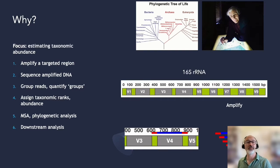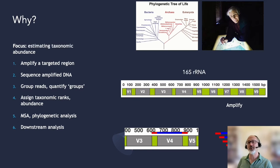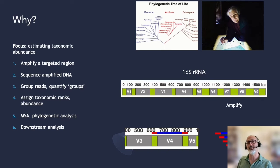We're focusing on estimated taxonomic abundance. In most cases, we've been doing this with 16S, which is by far the most common use case. We initially developed this to start implementing it for V4 analyses, but with the advent of newer sequencing technologies and some idiosyncrasies with the way amplicons are derived, we wanted to make a workflow that is much more flexible.